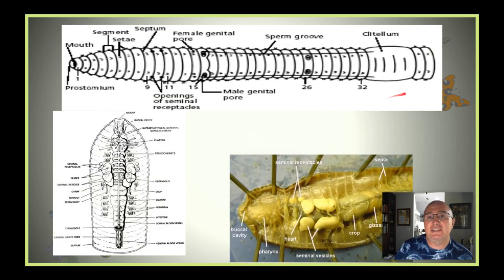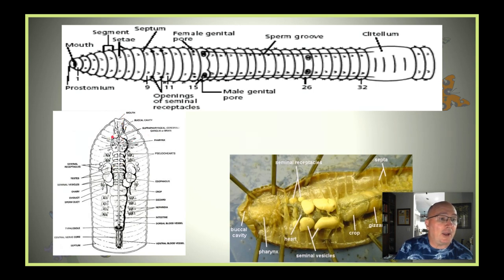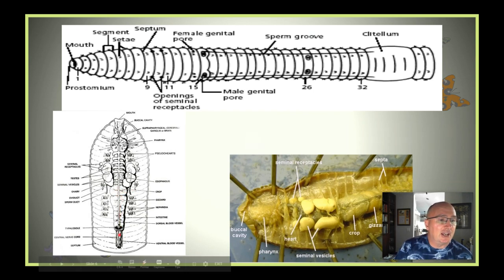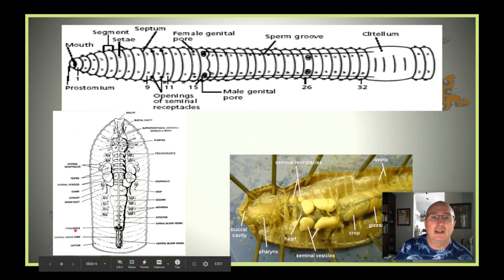This is an example of the earthworm — what you dissected in middle school. Over here we see the aortic arches, which are the hearts of the earthworm. We also see a mouth, a brain up here, and a crop and gizzard. The crop is where a lot of the mechanical digestion occurs. Then going down into the intestines, which run the length of the body, is where a lot of the nutrients are absorbed. Anything that can't be absorbed is released through the second opening, the anus.